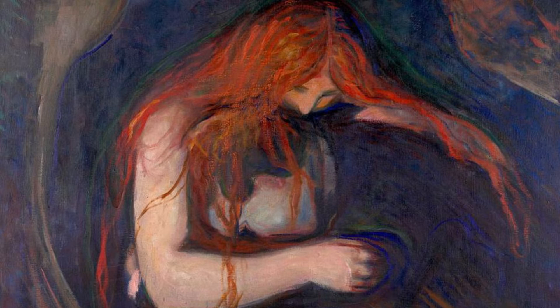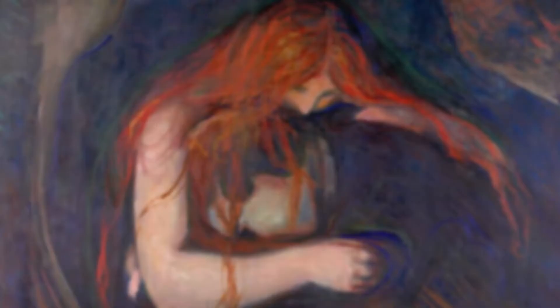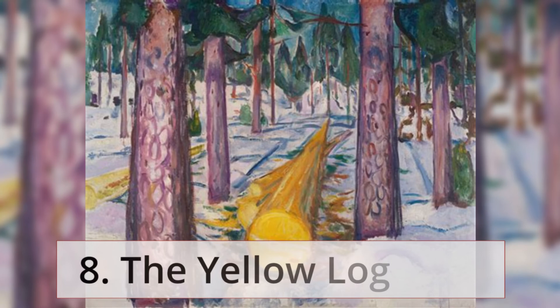7. Love and Pain. In Love and Pain we can see a couple with a woman who is either kissing or biting the man on his neck. That's why it has been referred to as Vampire as well, a name not given to the work by the artist himself.